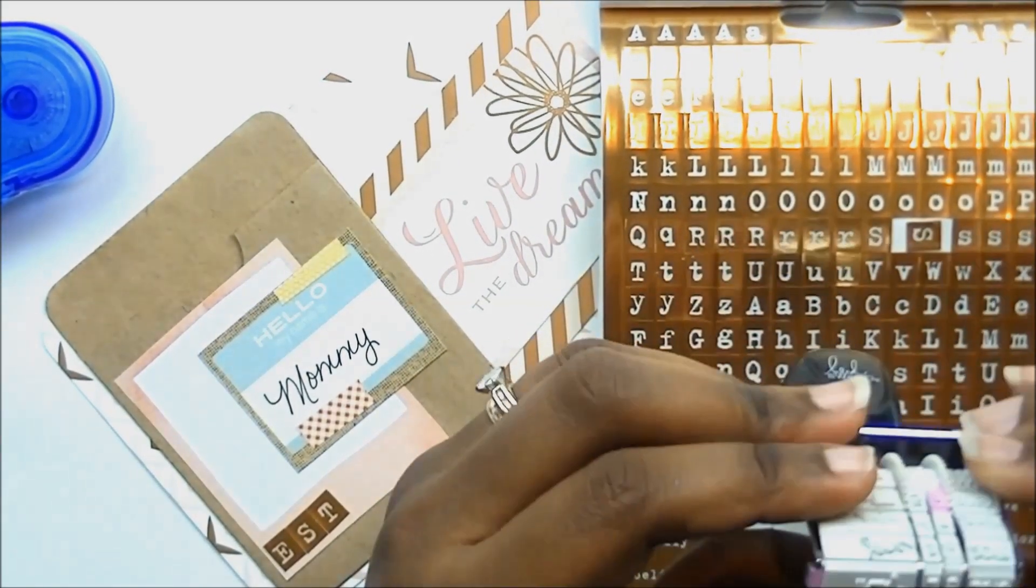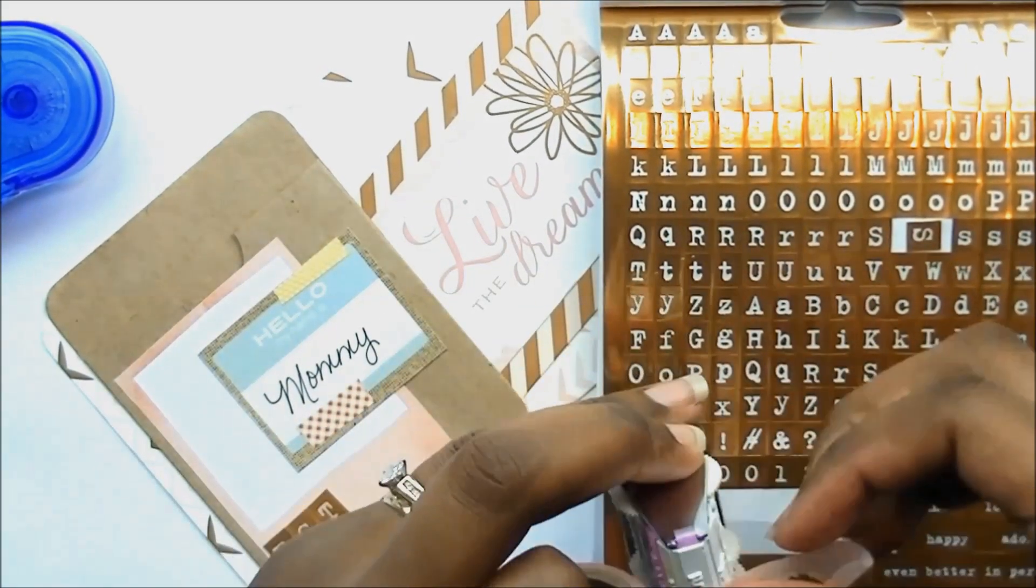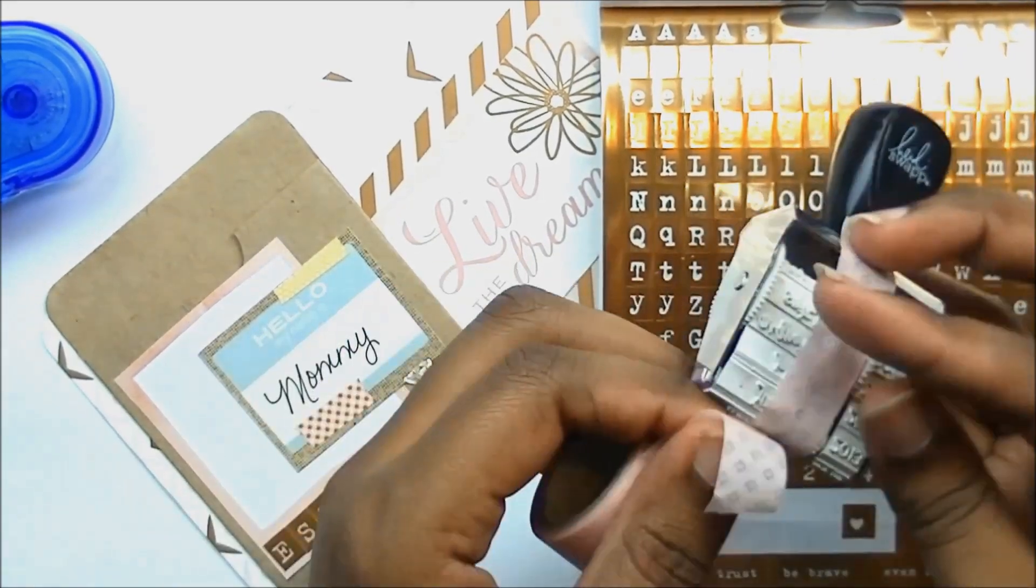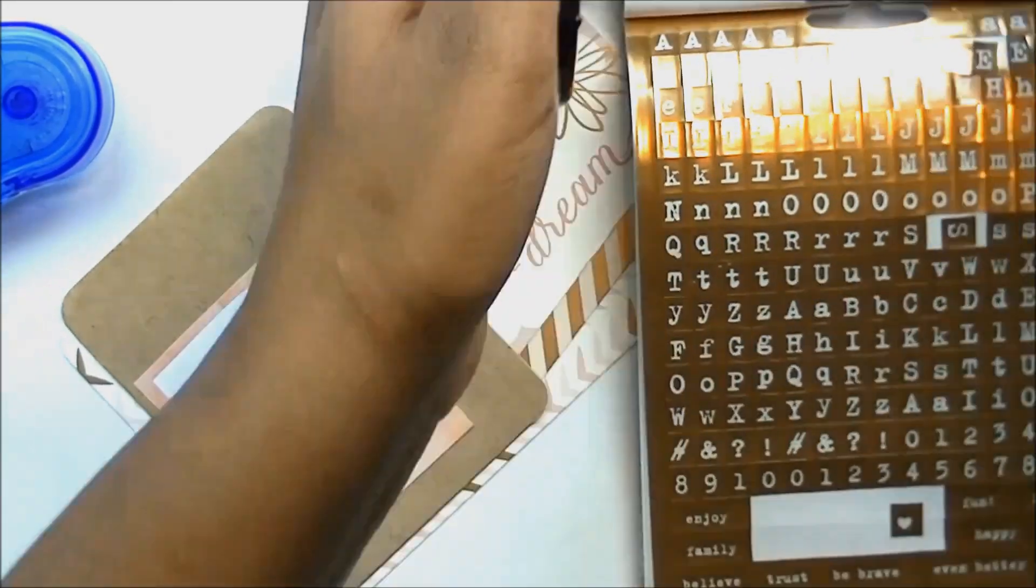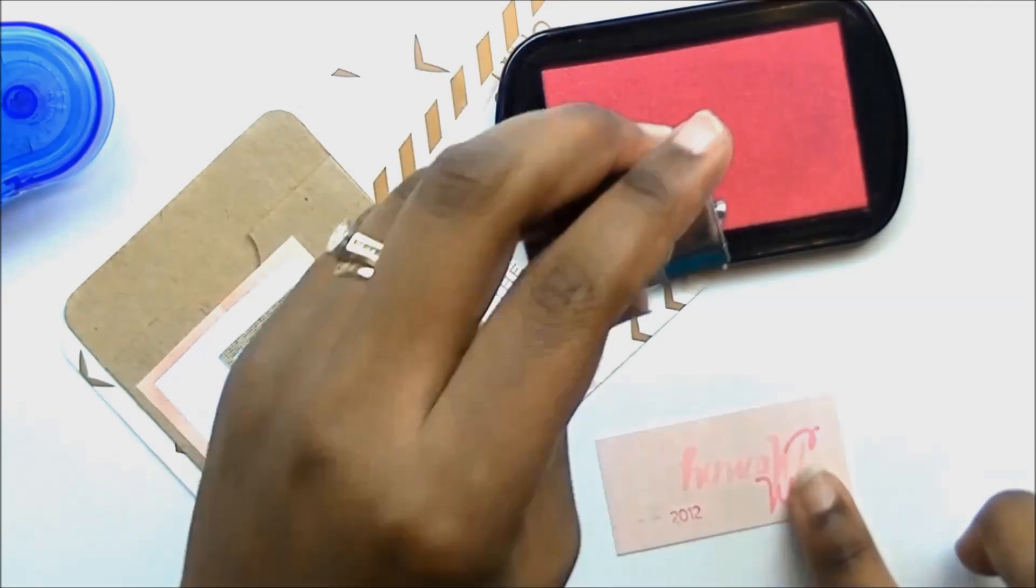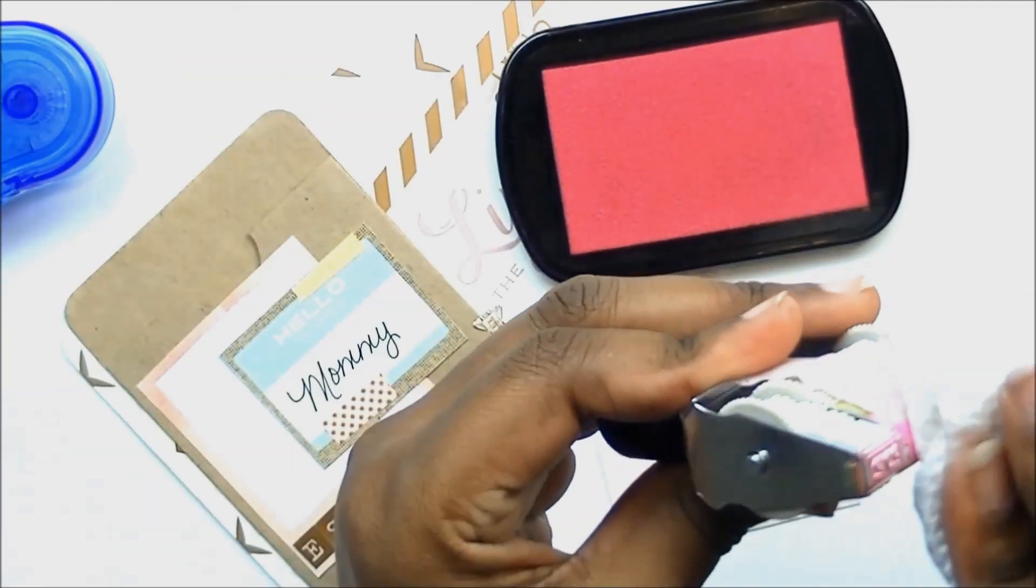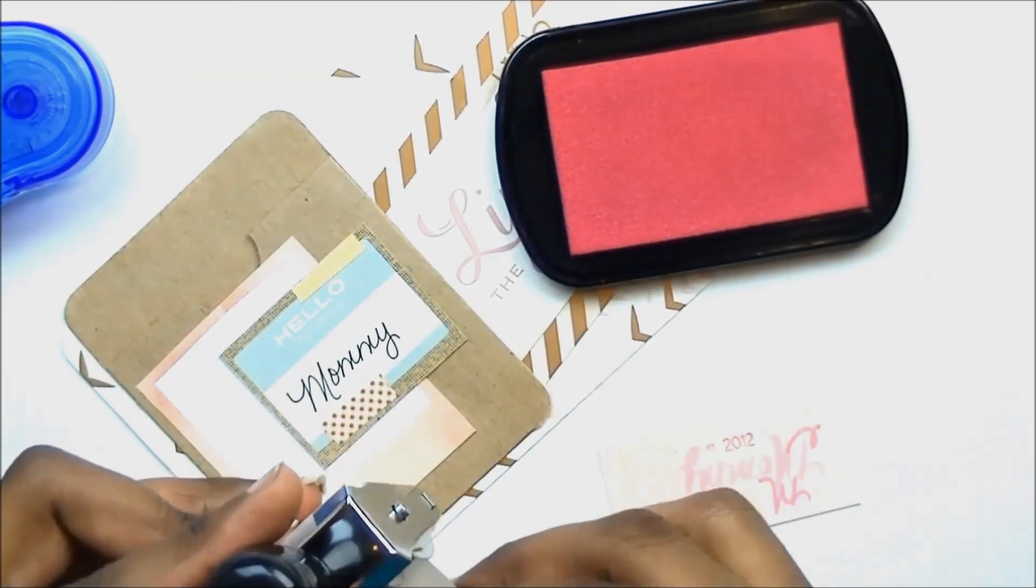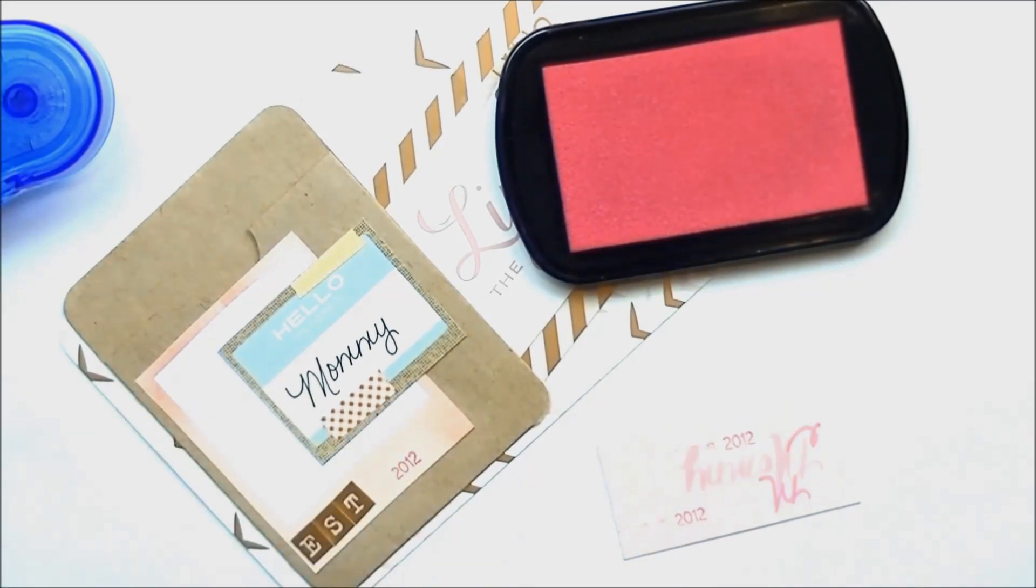I stamped 2012 on there, and normally my stamps do not come out right, but for once it actually worked. I'm just moving those letters over to be closer to the 2012 and I just pop a little enamel dot right there.